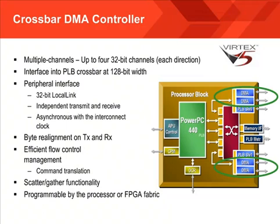The PowerPC 440 processor also has four direct memory access, or DMA, ports. These are commonly used to connect to the tri-mode Ethernet MAC included in your FPGA. Each offers a 32-bit channel for each direction and interfaces to the crossbar at 120 bits.